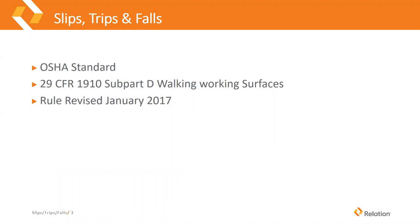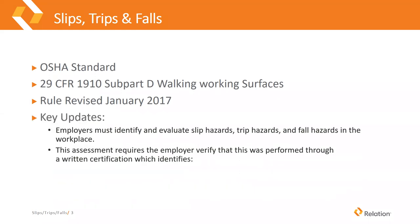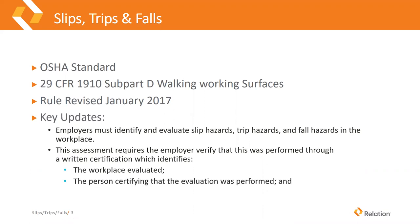The OSHA standard that governs slips, trips, and falls is 29 CFR 1910 Subpart D — Walking-Working Surfaces. This rule was revised around January 2017. They didn't throw out the old rule completely; they updated a lot of things. Some of the key updates were that employers must identify and evaluate slip hazards, trip hazards, and fall hazards in the workplace. This assessment requires the employer to verify that it was performed through a written certification which identifies the workplace evaluated, the person certifying that the evaluation was performed, and the dates of the hazard assessment.